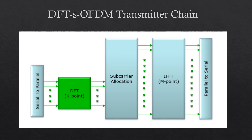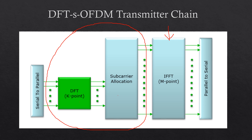In the DFTS-OFDM transmitter chain, there is an IFFT block similar to the OFDM transmitter chain. The two new blocks in comparison to the OFDM transmitter chain are the DFT block and the subcarrier allocation block. It is evident that the lengths of DFT and IFFT are different: K is less than M, where K is the DFT length and M is the FFT length.